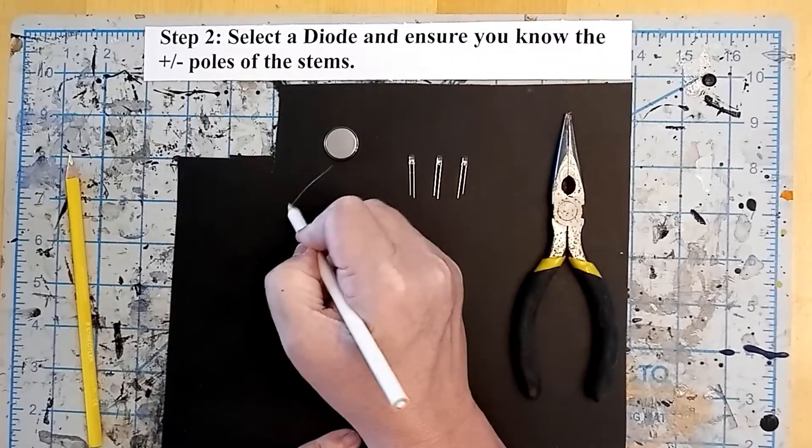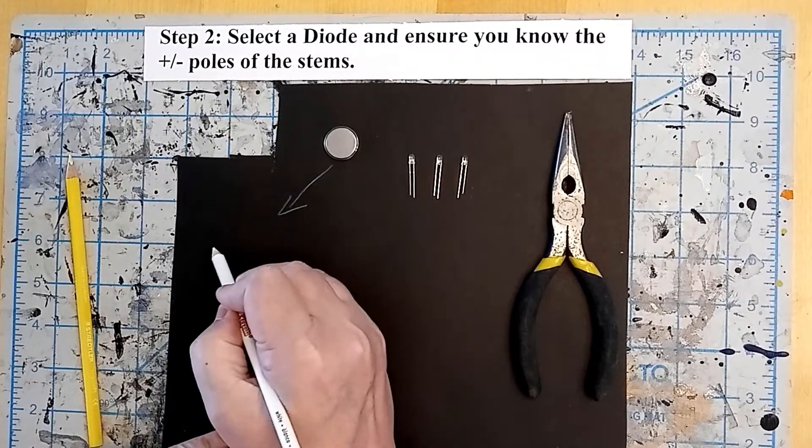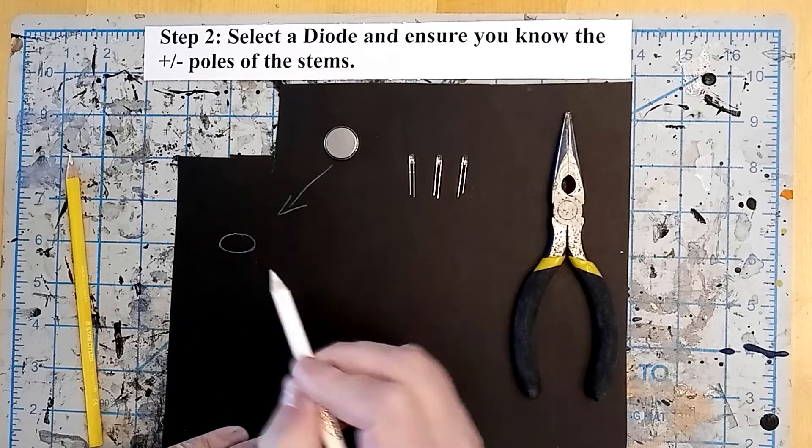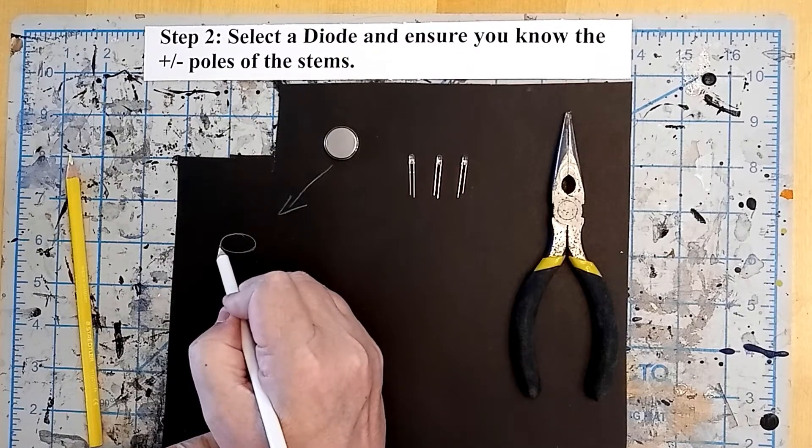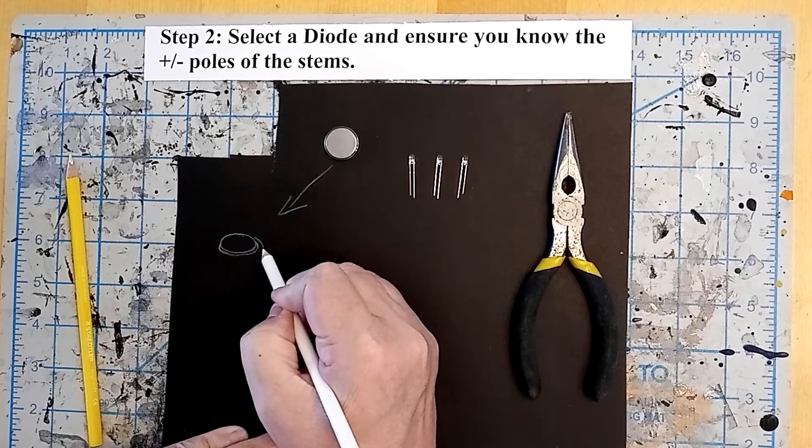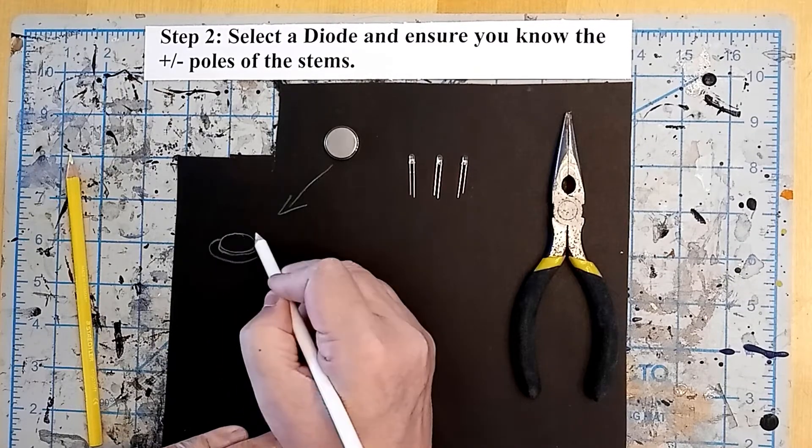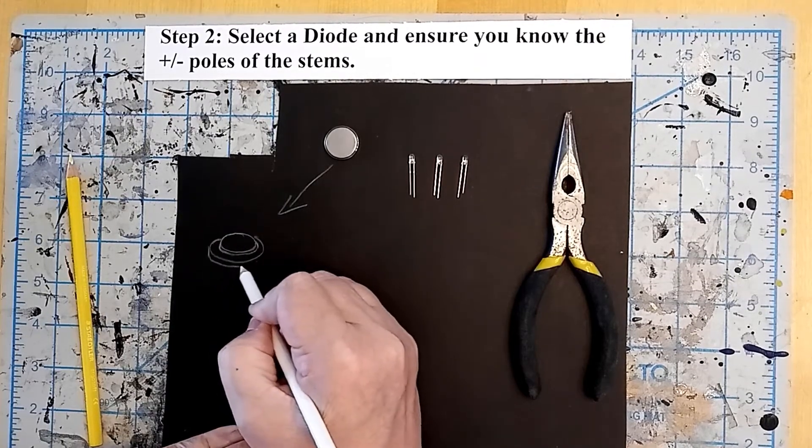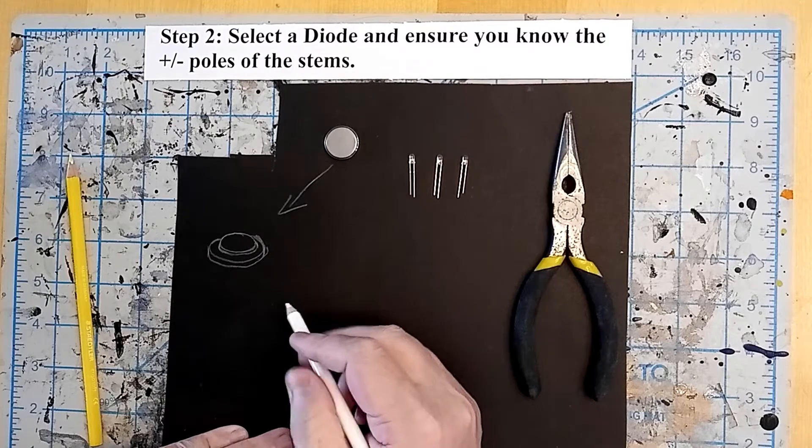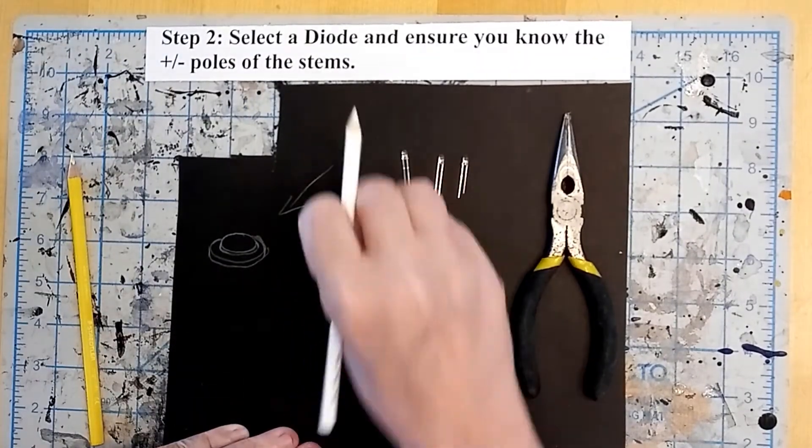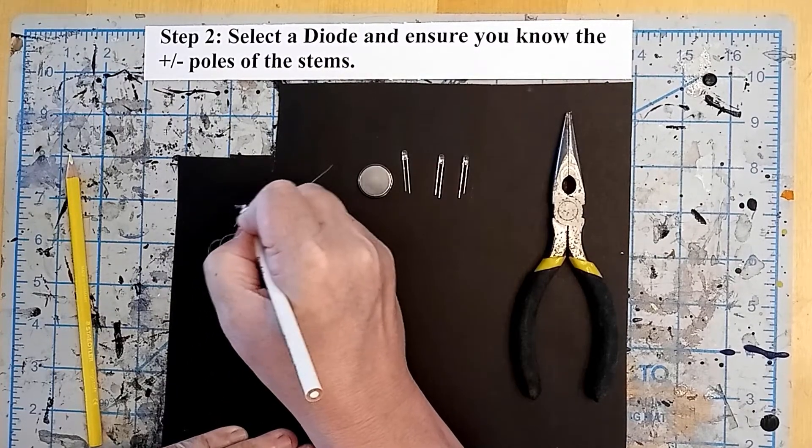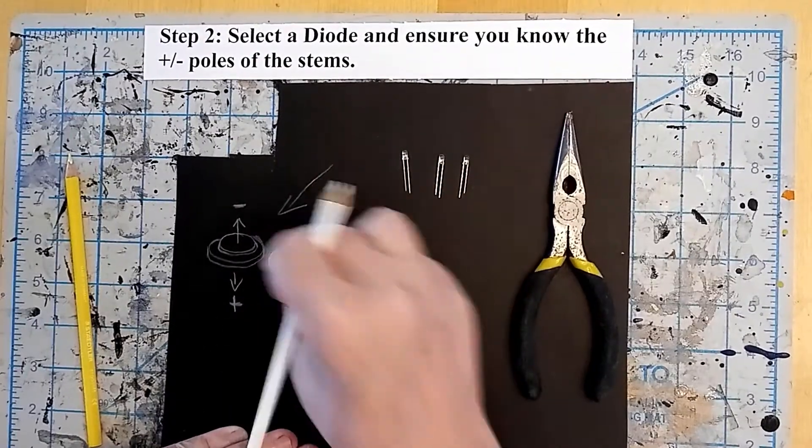First thing we want to do is get some 3 volt watch batteries and note the polarity on the battery. One side is going to be positive and one side is going to be negative. On these batteries, the slightly indented top portion is the negative portion and the slightly wider bottom portion is the positive pole. This is important because the LEDs will only work if the polarity is aligned correctly. I'm making a little diagram to show positive on the larger flat side and negative on the smaller rounded side.